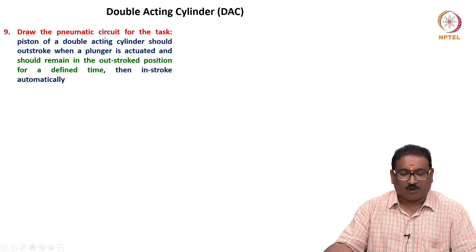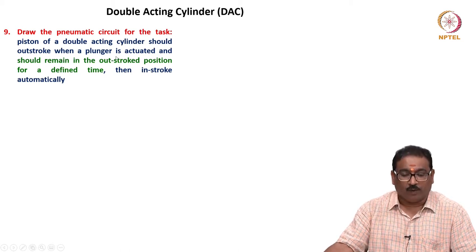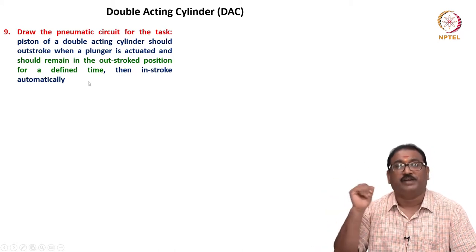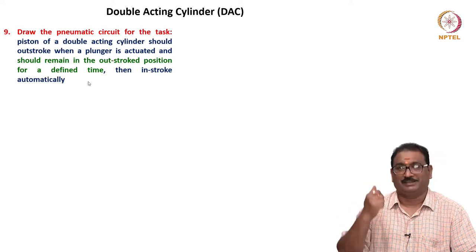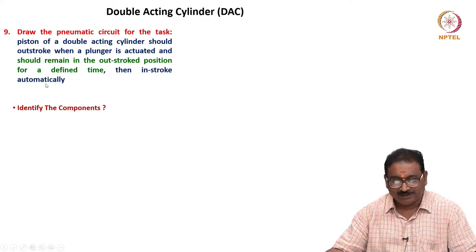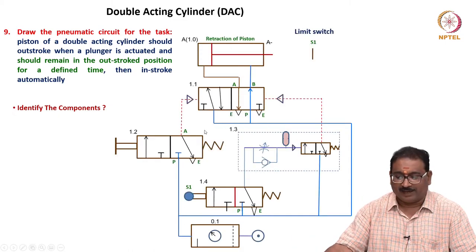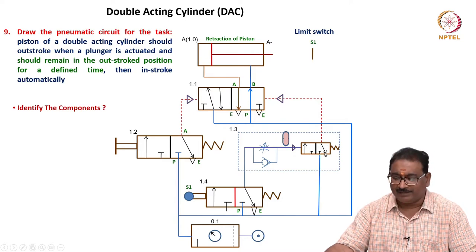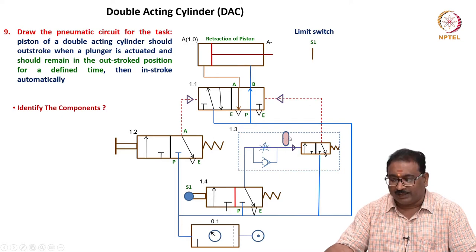Now we will see the ninth problem. Draw the pneumatic circuit for the task: the piston of a double-acting cylinder should outstroke when a plunger is actuated and should remain in the outstroke position for a defined time - 10 seconds, 20 seconds, 30 seconds - because loading and unloading operations may take place. Then in-stroke automatically after waiting for a certain period. The key component added here is a time delay valve. The time delay valve is a 3/2 DCV, with a throttle based on the time required to fill the accumulator.